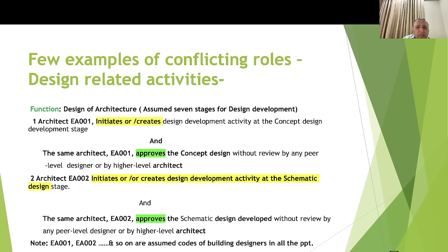In example two, architect two performs the schematic design development and then reviews and approves the same schematic design without any review by a peer-level designer or higher-level architect. The employee codes like EA001, EA002, EA003, EA004, EA005 are used simply for reference and are not significant in themselves.